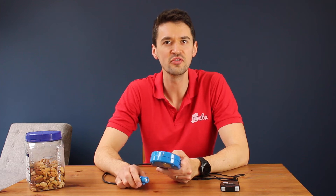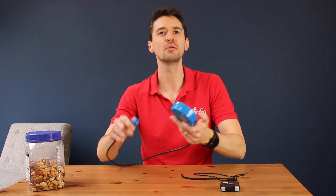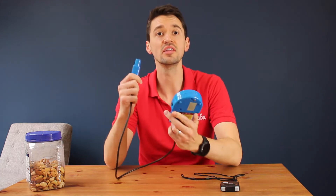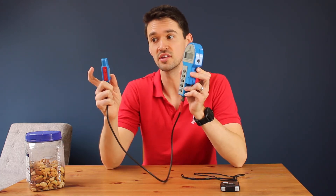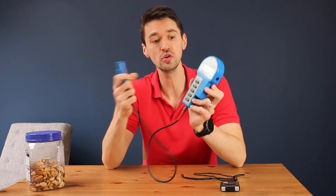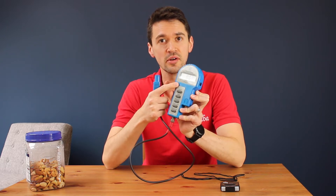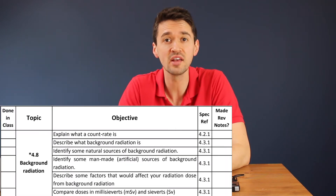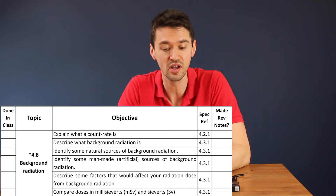Welcome to this GCSE physics video on background radiation. What we're going to be looking at today is actually measuring the background radiation in the room we're in using this Geiger-Müller tube connected to this Geiger counter. We're going to know what background radiation is and what the sources of that radiation are.